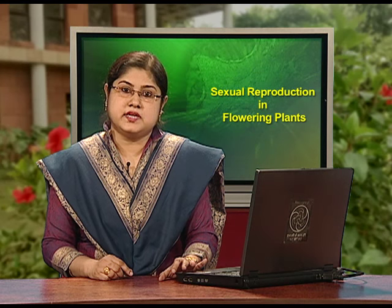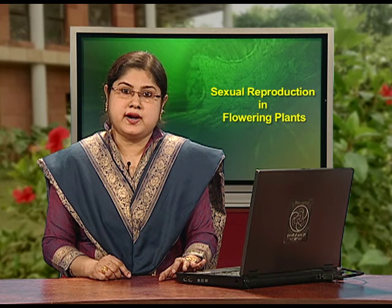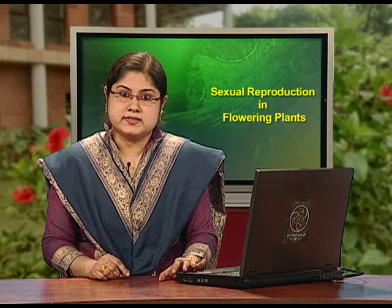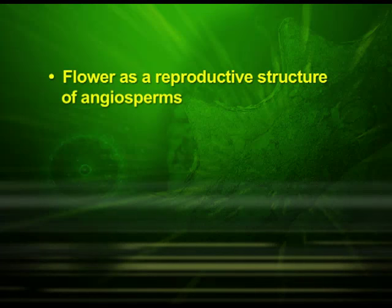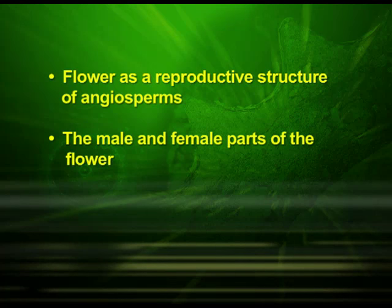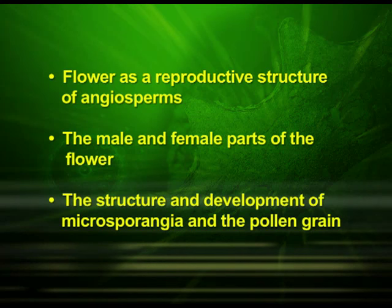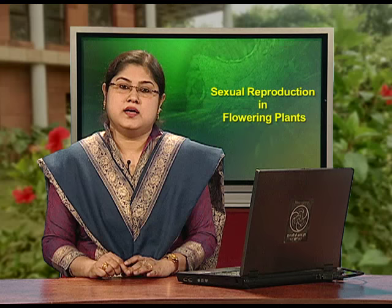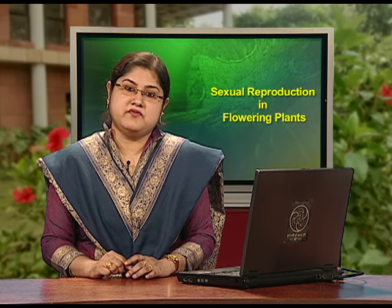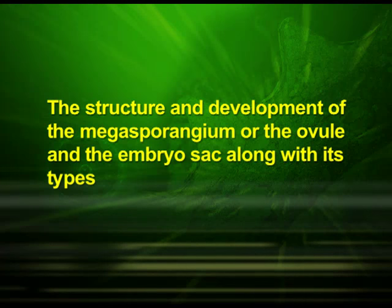We have divided this chapter in four parts. In the first part we will discuss about flower as a reproductive structure of angiosperms, the male and female parts of the flower, the structure and development of microsporangia and the pollen grain. The second part will cover the structure and development of the megasporangium or the ovule and the embryo sac along with its types.